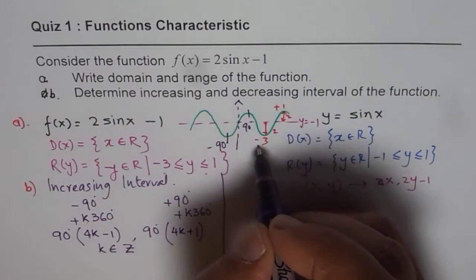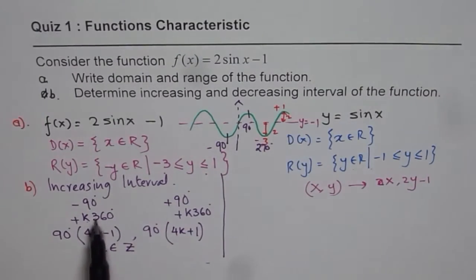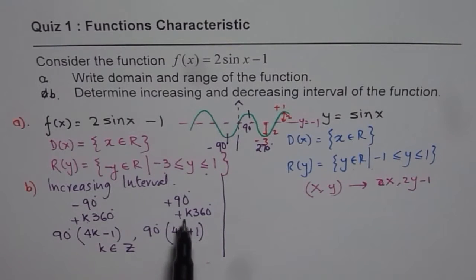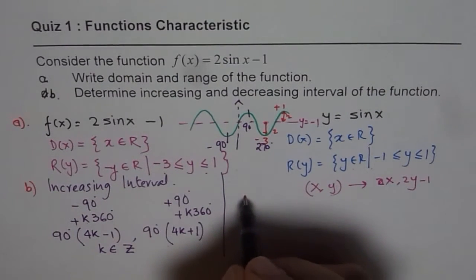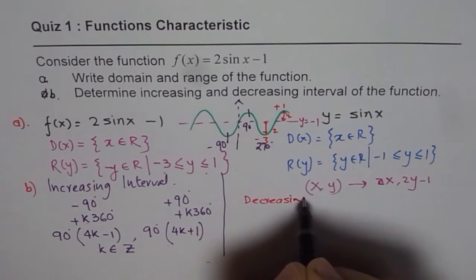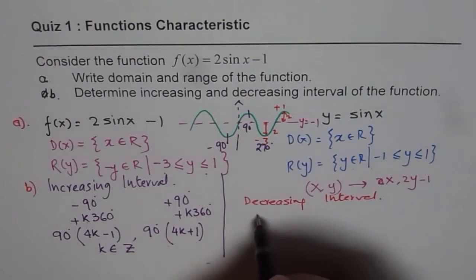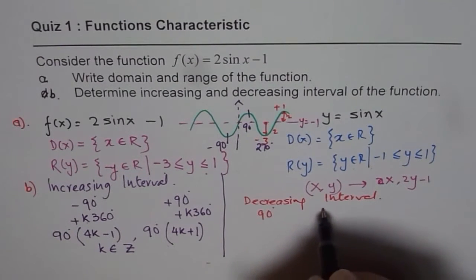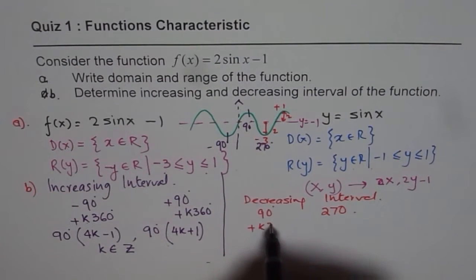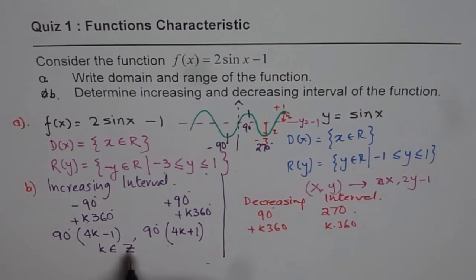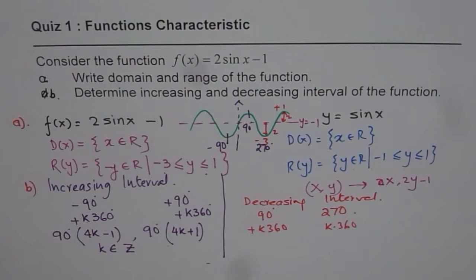The function decreases from 90° to 270°. To each bound, you add k·360°, and then factor it out to get a general formula, just like we did for the increasing interval. I am leaving the decreasing interval for you to complete. Write down your result and move on to the next video. I hope that helps — thank you and all the best.